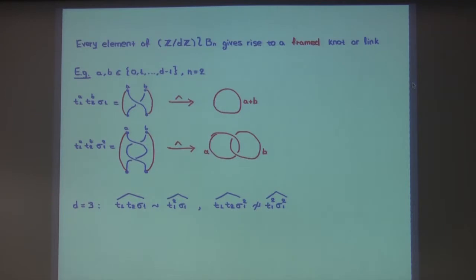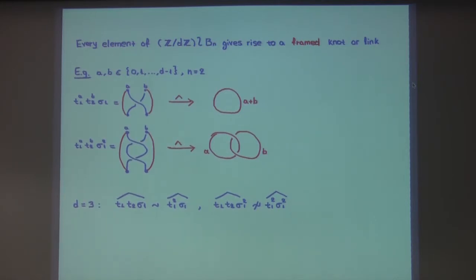When we talk about equivalence of framed knots, we want the diagrams to be equivalent, the underlying knot or link to be equivalent, but we also want to have the same weights.